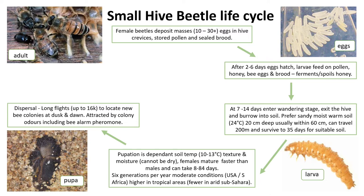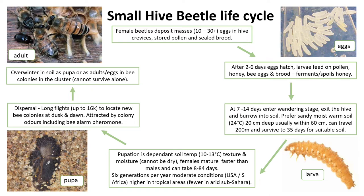The beetles are attracted by the odour of the colony and typically travel at dawn and dusk. Beekeepers in the US have observed that the day following an apiary inspection there is often a huge influx of beetles, suggesting that the odour released from the colony serves as a stimulus for beetles to home in on the apiary. Small Hive Beetles overwinter either as pupae in the soil or as adults or eggs in a colony, where they stay near to the cluster of bees to keep warm.